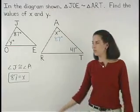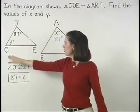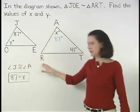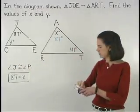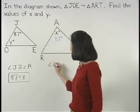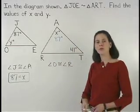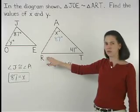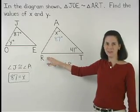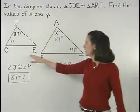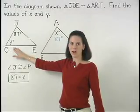To find the value of y, we know that the corresponding angles O and R are congruent. The problem is, we don't know the measure of angle R, and we need to know the measure of angle R in order to find the value of y.